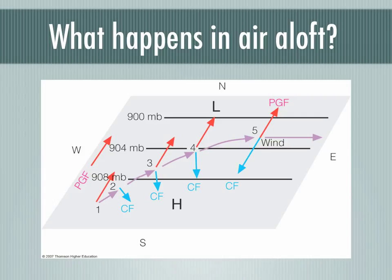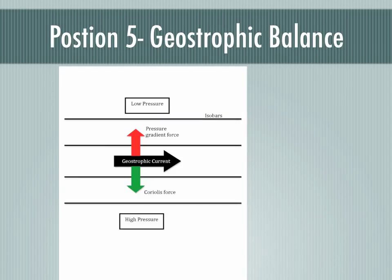As the wind picks up speed at positions 2, 3, and 4, the Coriolis force increases in strength to the point where at position 5, the PGF and CF are equal and in balance, producing a net acceleration of zero. As a result, the wind will blow parallel to the isobars at a constant speed.